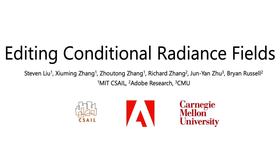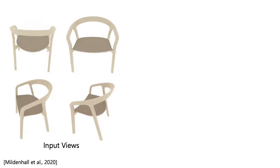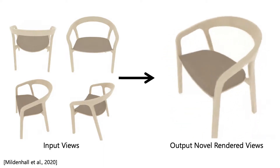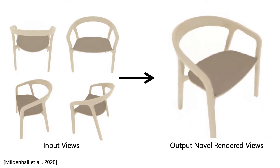We present Editing Conditional Radiance Fields, an approach for synthesizing global and local object edits in novel views. We build on neural radiance fields, which, given multiple input views, synthesize high-quality novel views of a single complex static scene.